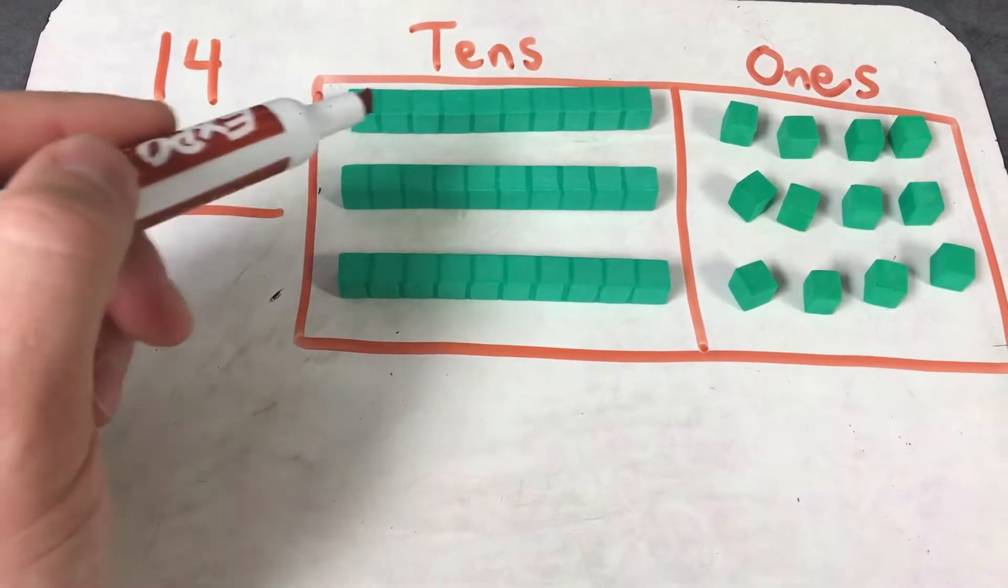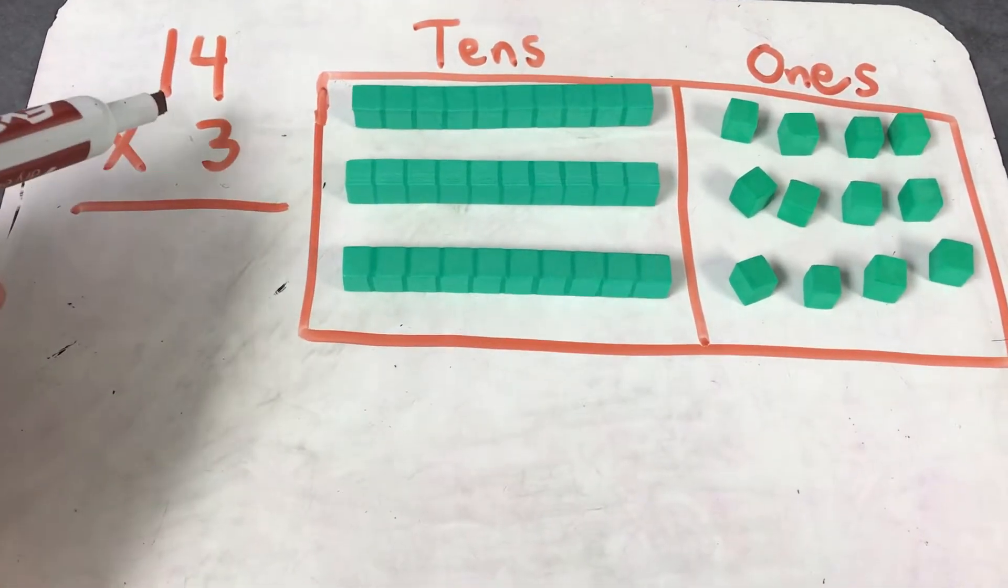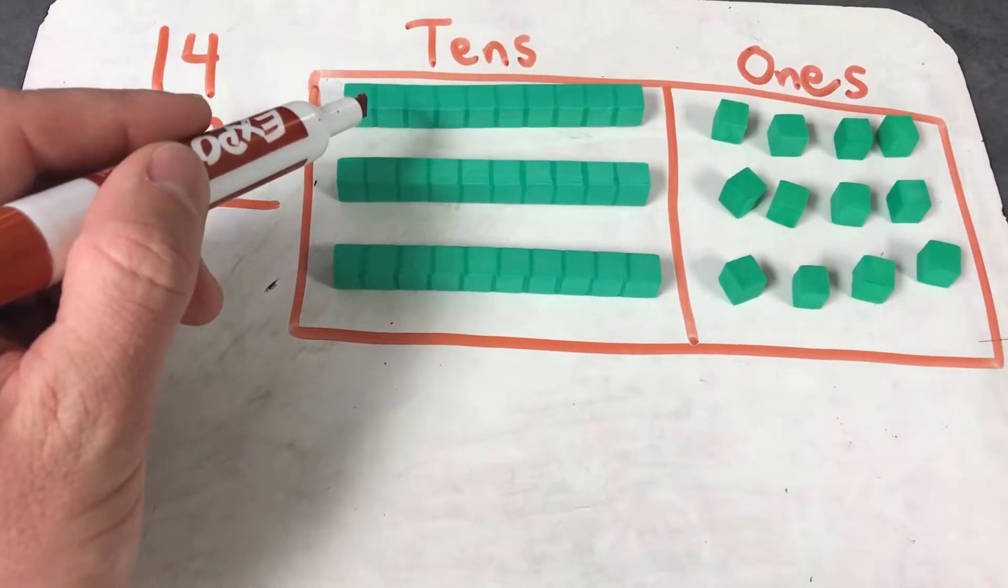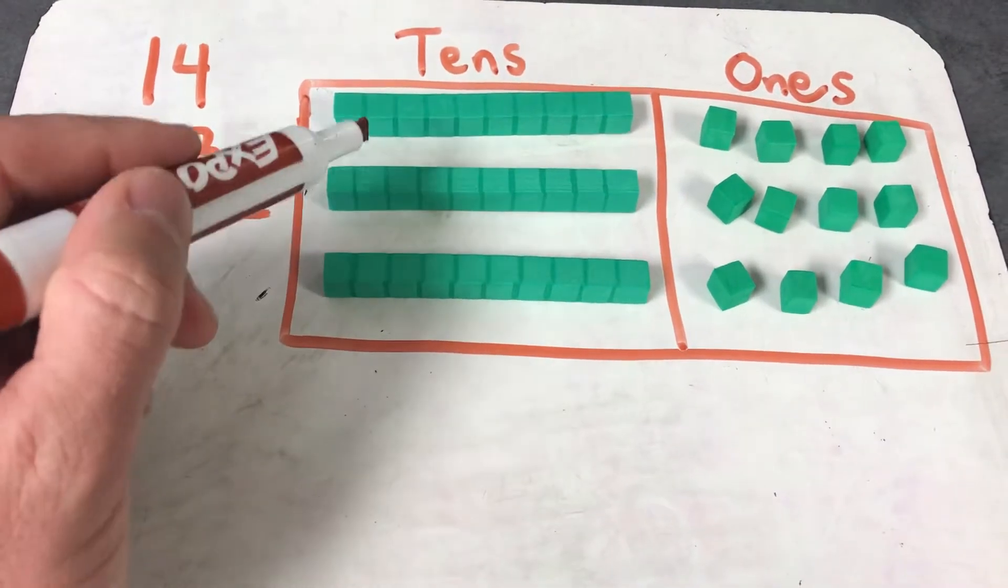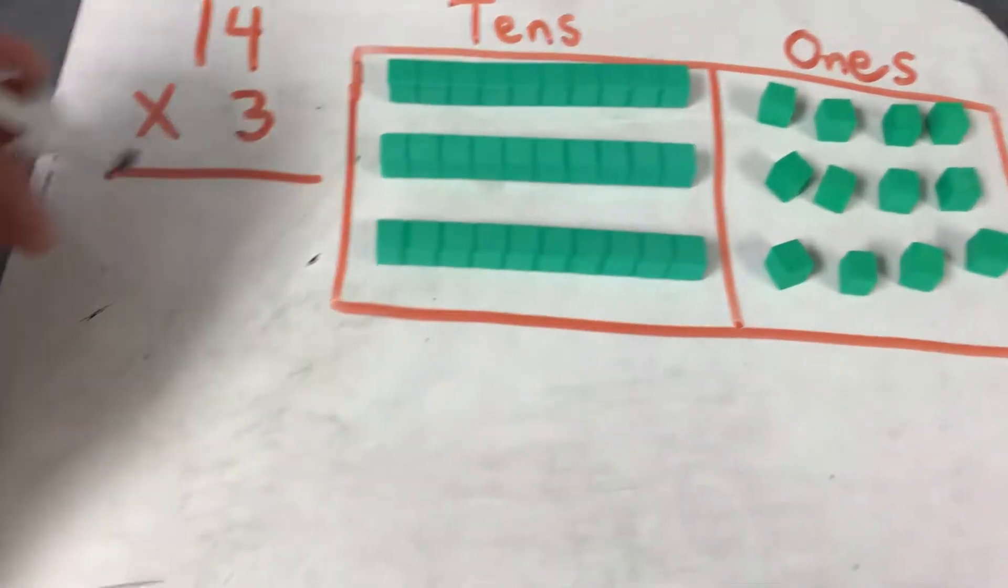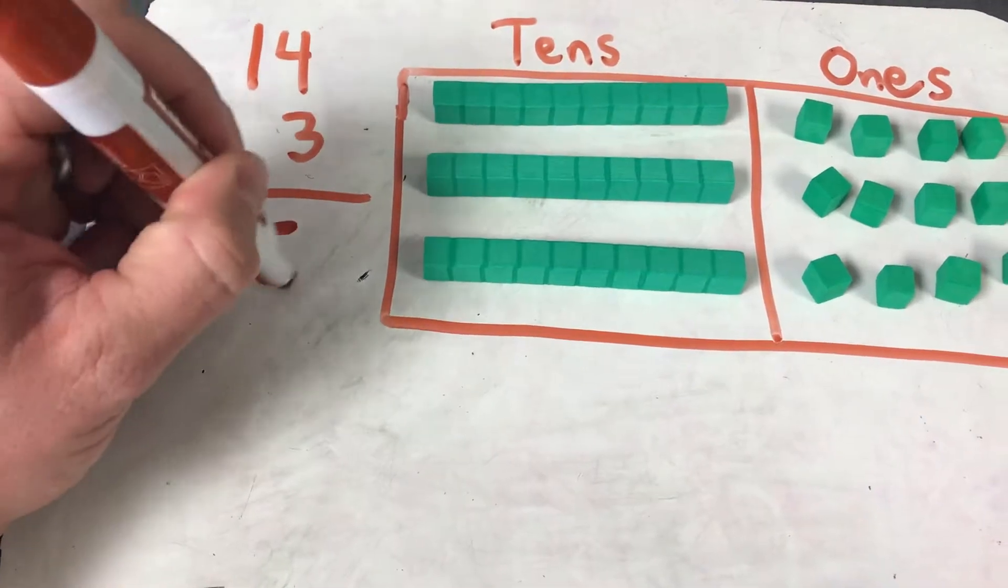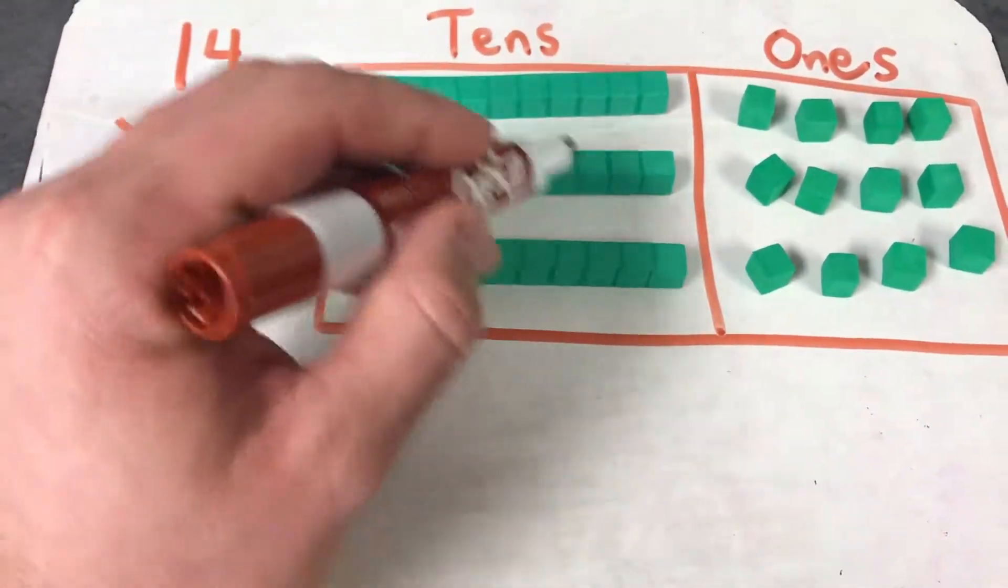So when I look at this, I can look at the different parts. I'm going to take a look at the three times ten parts, and I've got three tens: ten, twenty, thirty. So the first part is simply thirty. That's this part right here.